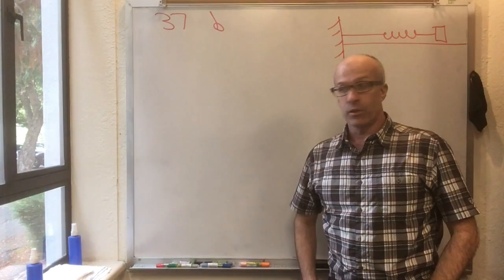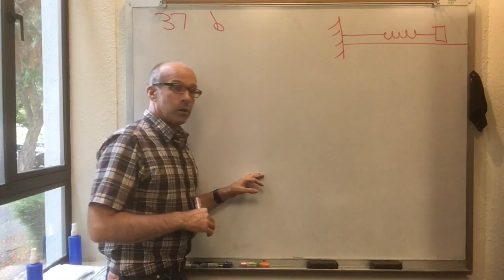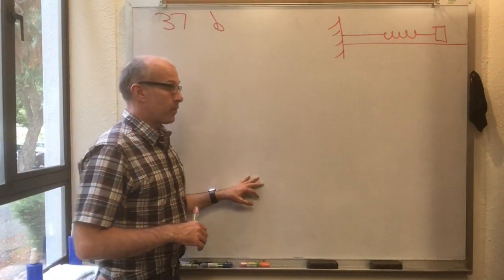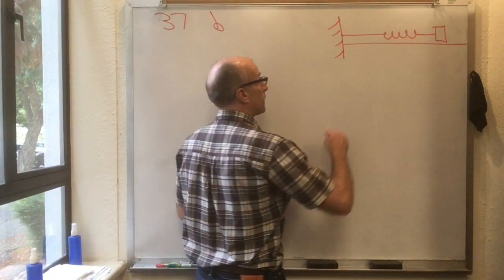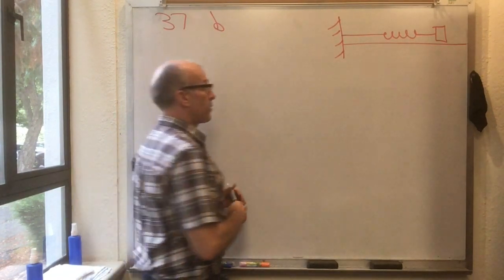So this is Flip Binnie Lecture 37B. And like I said, there's two major topics in this chapter, which is circular motion and simple harmonic motion. Now we're going to jump into simple harmonic motion.